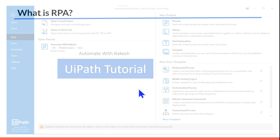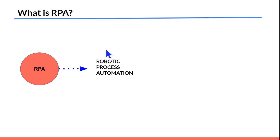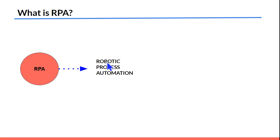Without wasting any further time, let's understand what is RPA. RPA is actually an acronym for Robotic Process Automation. To understand process automation, we need to be able to make a difference between robotic process automation and the normal robots we have seen in the manufacturing industry.